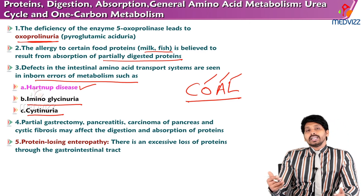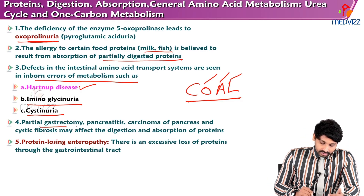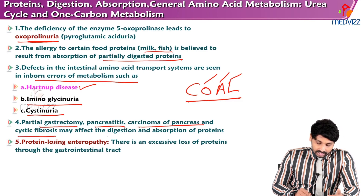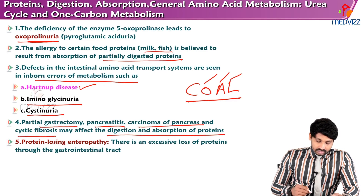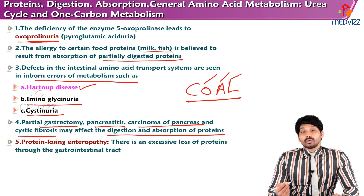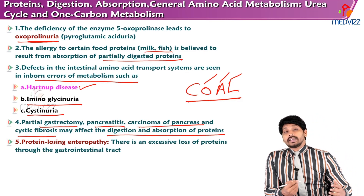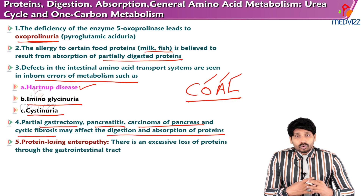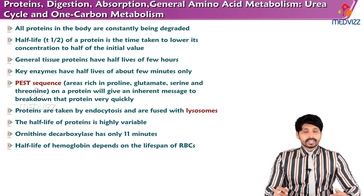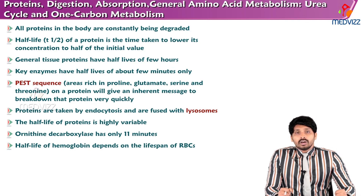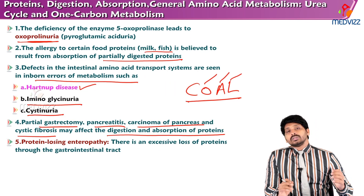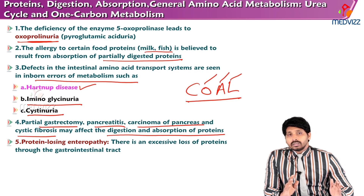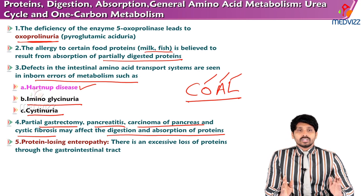Other reasons for inability in absorption include partial gastrectomy, pancreatitis, carcinoma of the pancreas, and cystic fibrosis, which may affect digestion and absorption of proteins. Protein-losing enteropathy involves excessive loss of proteins through the gastrointestinal tract. These are all the defects related to absorption and reabsorption of proteins. That concludes the absorption part of digested amino acids and the related disorders. Thanks for watching.